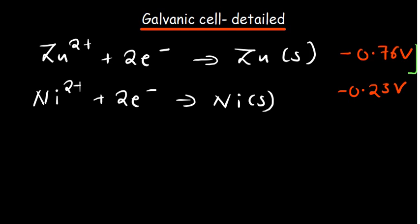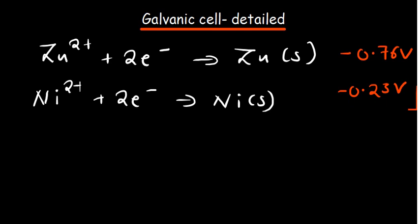They're called reduction potentials because these reactions are all written in the form of reductions. It is up to you to separate them and, by looking at what you've been given, to see which one is going to be oxidized and which one is going to be reduced. What we want is to get a positive standard cell potential. Whenever you reverse a half reaction, the sign of the reduction potential changes — that is very important.